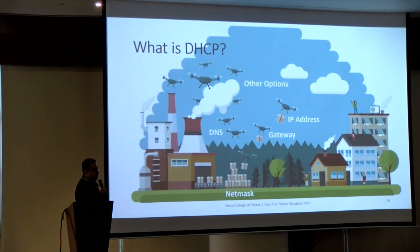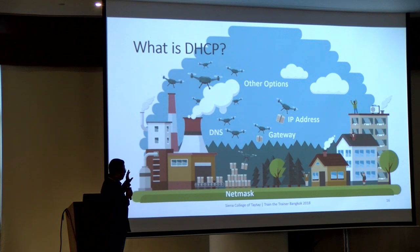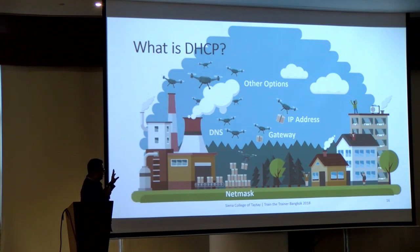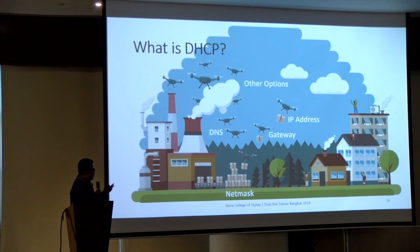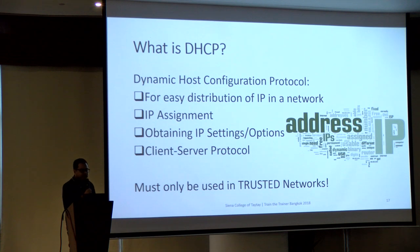So, what is DHCP? I tried to find pictures which depict or explain the function of DHCP. It is more about the distribution of certain options — specifically IP address, gateway, DNS, net mask, and other options — to devices. DHCP stands for Dynamic Host Control Protocol. It is for easy distribution of IP in a network: IP assignment, obtaining IP settings, and options. It is based on a client-server protocol.